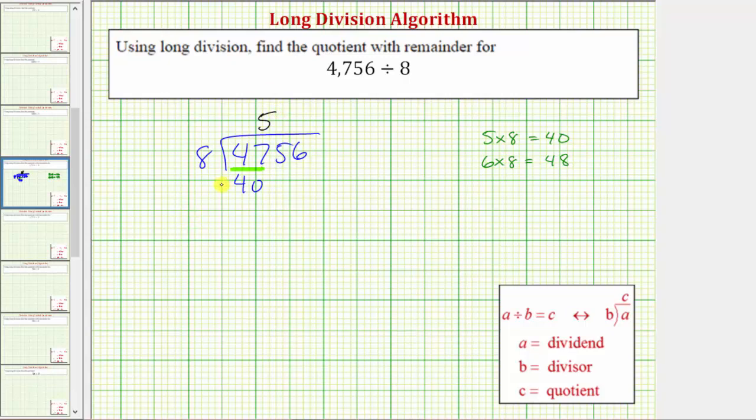Whenever we find our product, we subtract. And whenever we subtract, the difference needs to be less than 8, because if it's not, the digit that we just placed in the quotient is not correct. Notice that 47 minus 40 is 7. Because 7 is less than 8, the 5 is correct.